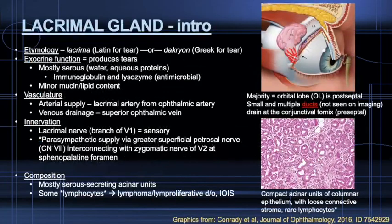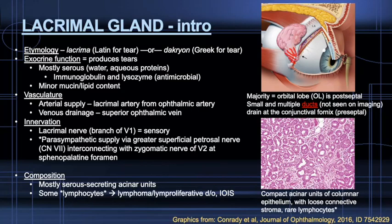First up, the lacrimal gland is an orbital structure that produces tears, mostly serous in composition. Histology shows the compact acinar units that produce serous secretions. The top graphic depicts numerous small ducts, highlighted in red, that drain at the conjunctival fornix. Innervation of the gland is complex with both sensory and parasympathetic supply and complex interconnection between branches of the trigeminal and facial nerves.